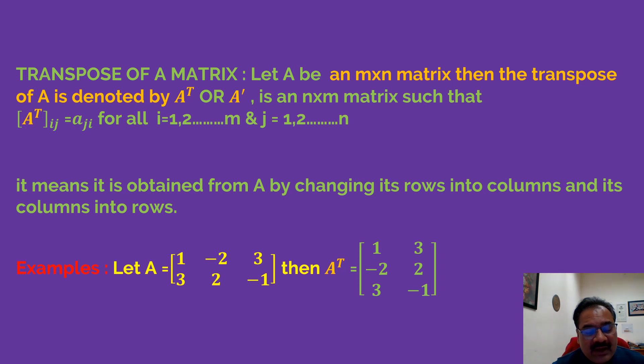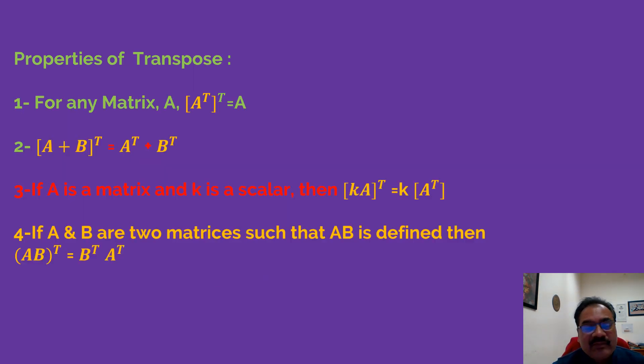For example, if A = [1 -2 3; 3 2 -1], then A^T = [1 3; -2 2; 3 -1]. Rows converted into columns and columns into rows. This is the order of 2×3, but the order of this matrix is 3×2.